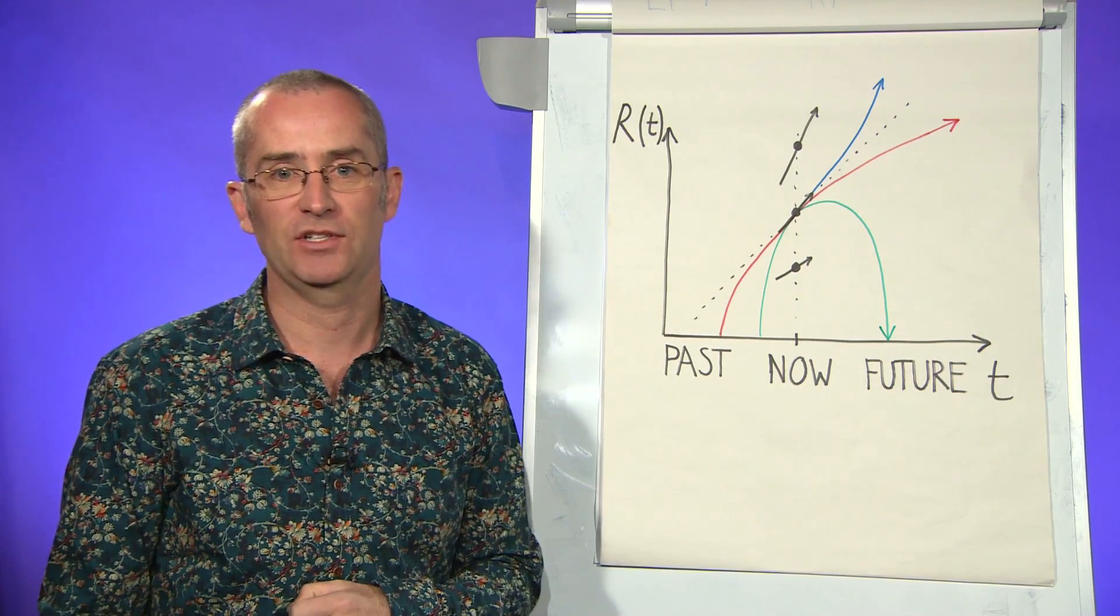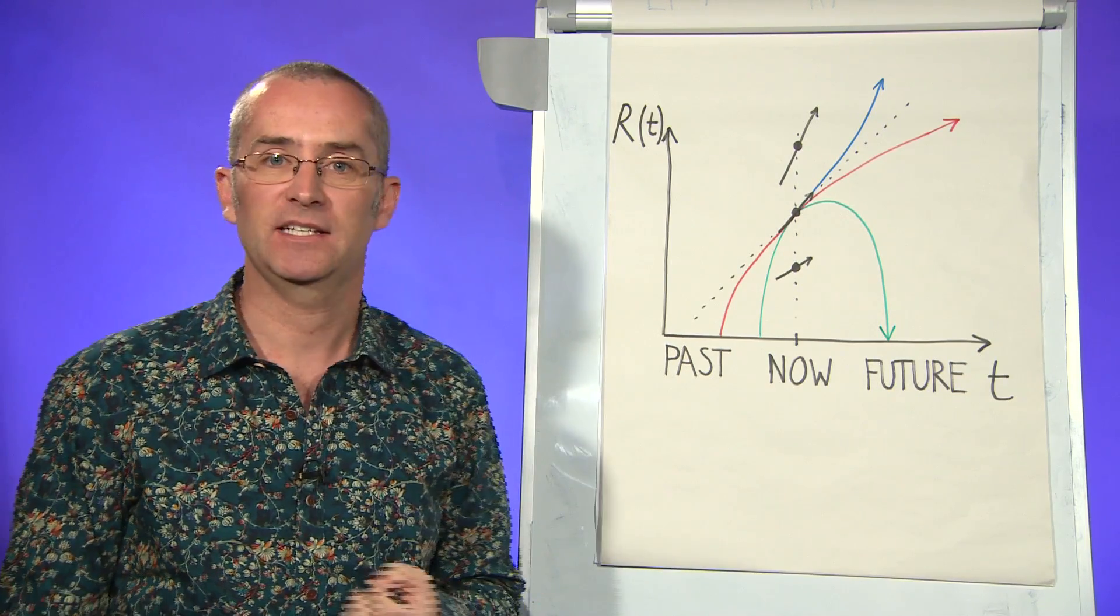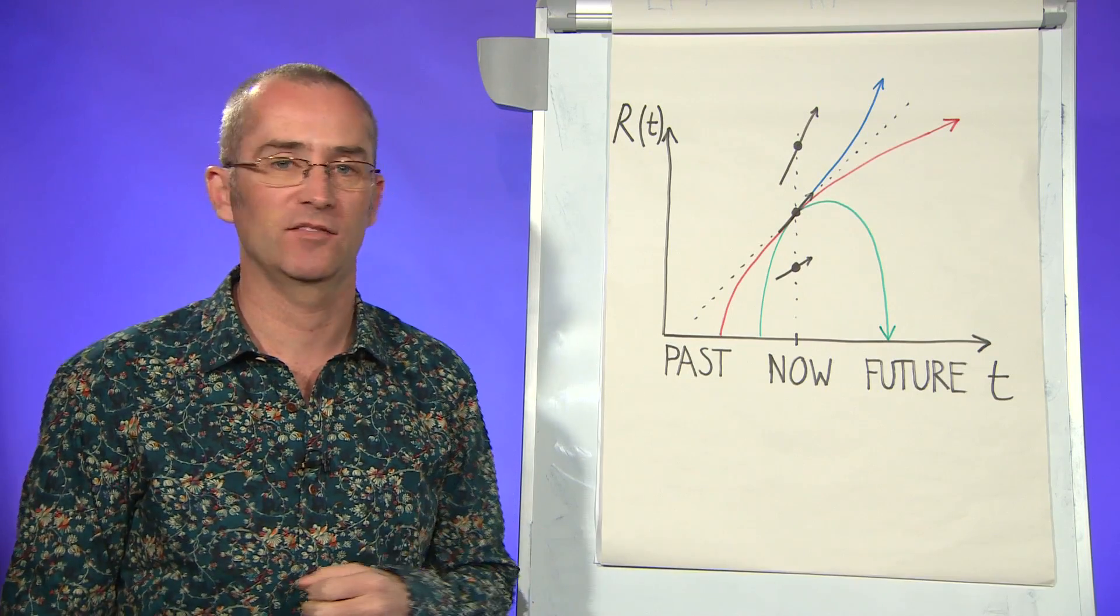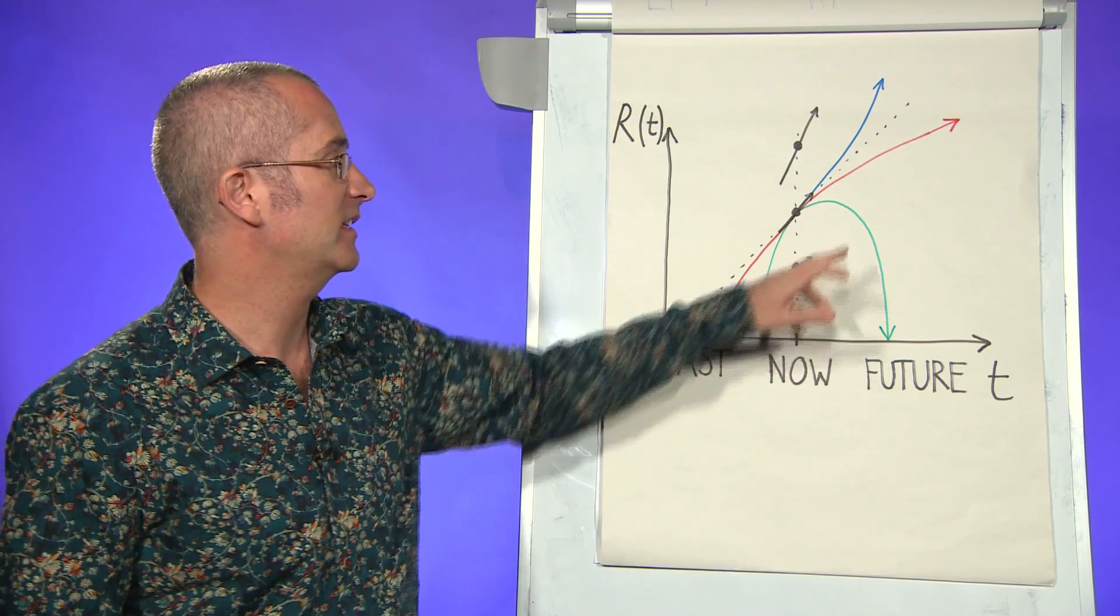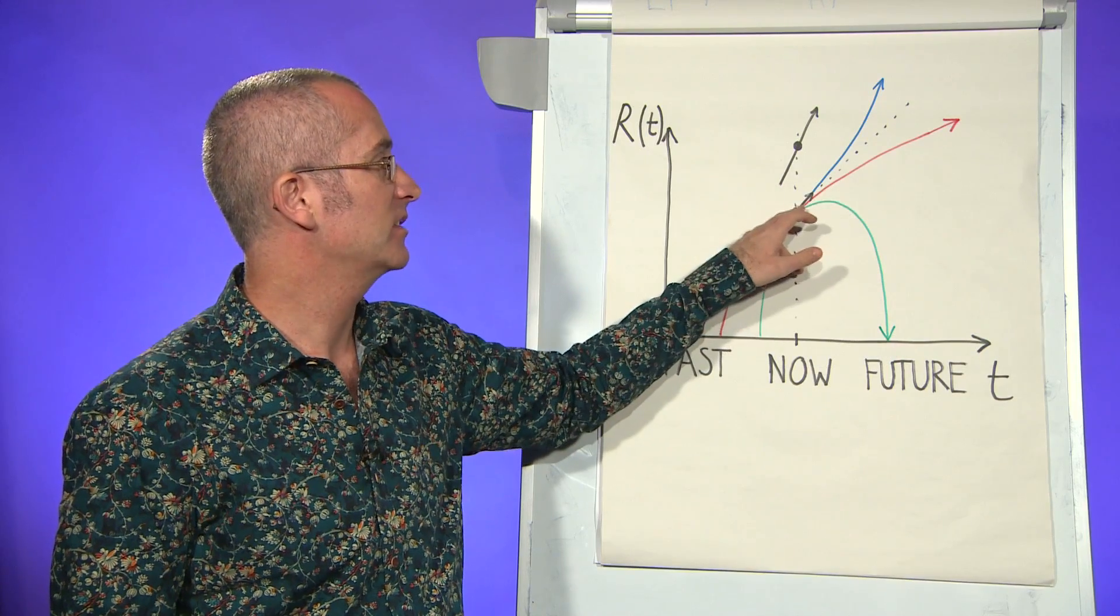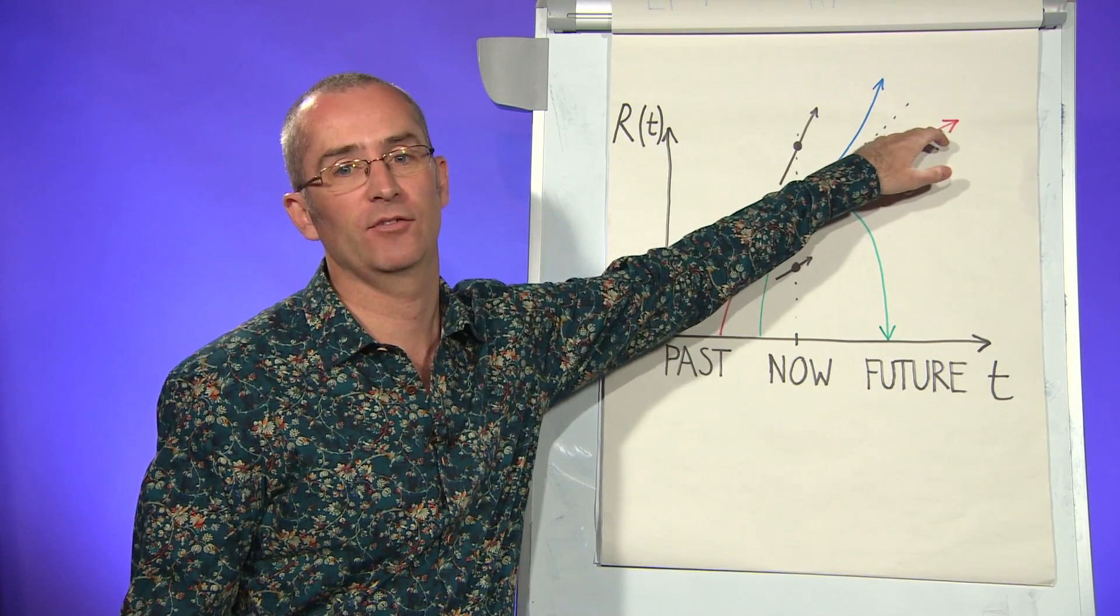To find out which of these options is actually taking place, astronomers have made surveys of the amount of mass in the universe and discovered that there's not nearly enough to recollapse the universe like this, so that the universe will go on expanding forever.